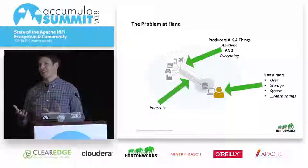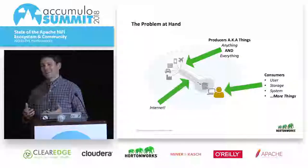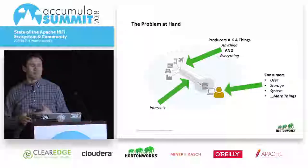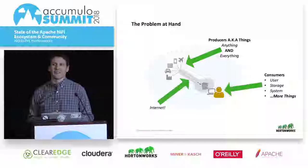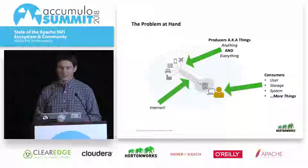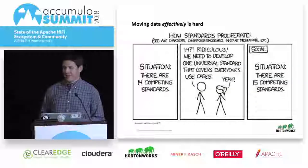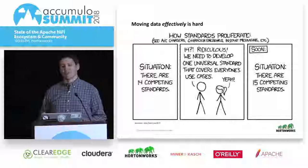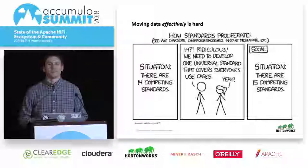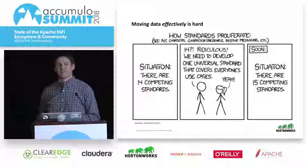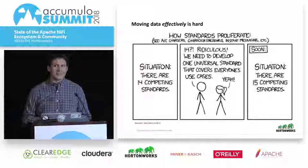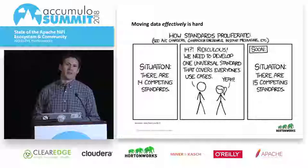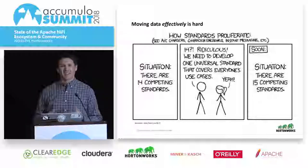When you think about the Internet of Things, we're in this process of bringing things together, allowing them to be consumed, and then providing good operational understanding and maintenance of that information. One of the things that came about and why NiFi was created is that moving data effectively can be hard and challenging. I like to refer to NiFi as being a good tool for dealing with the social or policy aspects - the soft skills of data movement and data transfer.